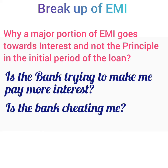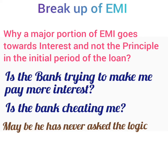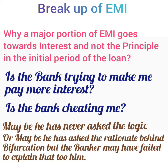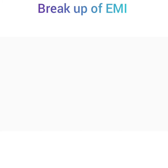There can be two reasons for this. He has never asked the logic, or he has asked the rationale behind the bifurcation but the banker has failed to explain it to him. The good news is that there is no rocket science involved behind the division of EMI into interest and principal. It's just simple math. Let us first understand what is EMI.